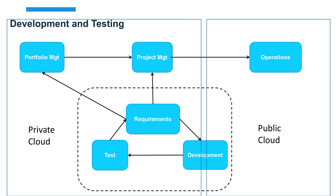Cloud computing provides a great platform for dev/test and utilization of DevOps and agile methodologies. You need to understand that portfolio management, project management, operations, requirements, testing, and development may span public and private clouds. As you build a DevOps system, these elements won't be local to one particular cloud platform — they'll typically be systemic to both private and public cloud platforms, because that provides the best cost advantages based on what you're doing in development and testing.